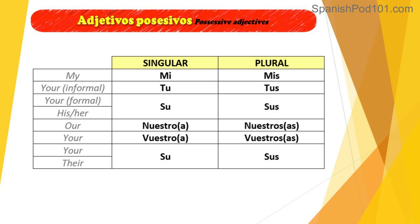For 'you all' in Spain, which is 'vosotros,' the possessive adjective 'your' has four forms: feminine singular 'vuestra,' masculine singular 'vuestro,' and the plural forms 'vuestros' and 'vuestras'. Vuestro, vuestra, vuestros, vuestras.